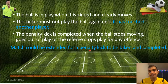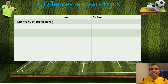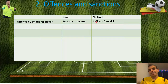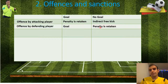Number two: offenses and sanctions during the penalty kick. If an attacking player — the player who kicks the ball — commits an offense and scores a goal, the penalty is retaken; the goal is not acceptable. But if he or she doesn't score a goal, it's an indirect free kick for the defending team. If a defending player commits an offense and the attacking player scores a goal, the goal will be acceptable. But if he or she doesn't score a goal, the penalty is retaken.